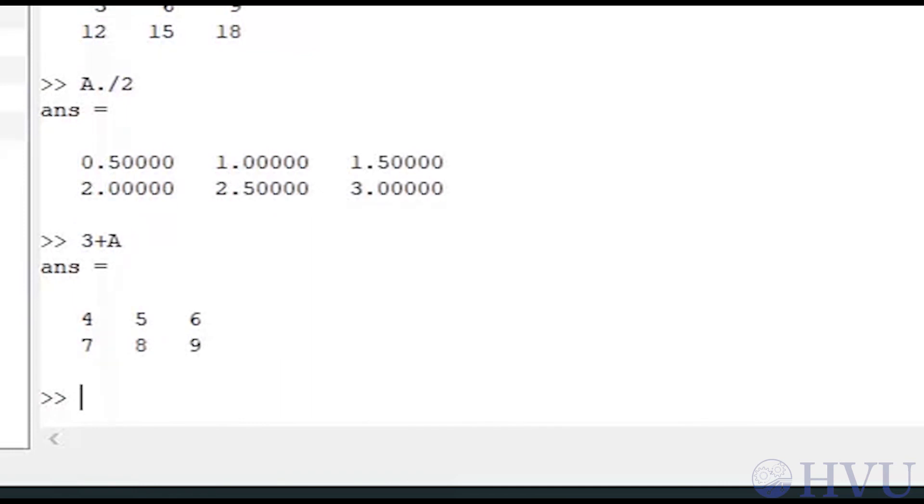As you'd expect, to square every element in the array A, we just type A dot caret 2.